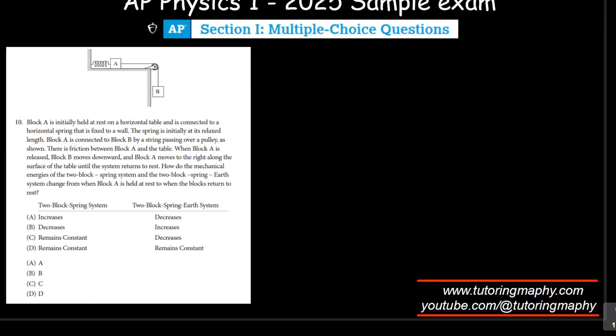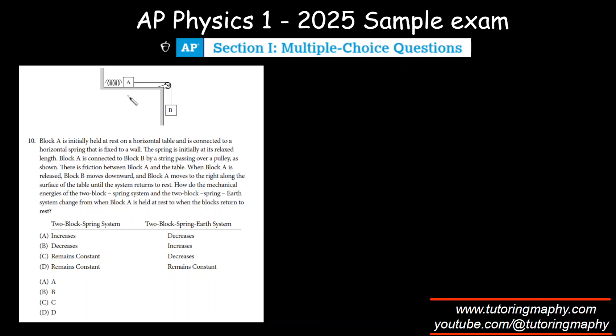All right, we understand the question, right? Initially, the entire system was at rest. Initially, the spring was at its relaxed state. Obviously, when we release B, this goes down, spring stretches, A goes to the right, and there comes a situation when that again comes to rest. So they are saying that the...